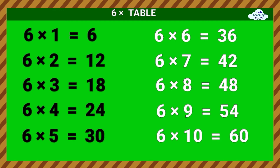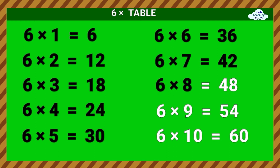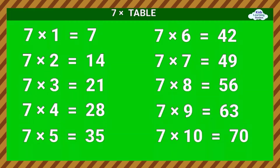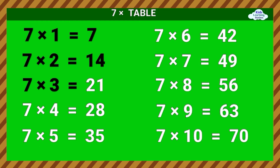6 times 6 equals 36. 6 times 7 equals 42. 6 times 8 equals 48. 6 times 9 equals 54. 6 times 10 equals 60. Seven Times Table. 7 times 1 equals 7. 7 times 2 equals 14. 7 times 3 equals 21.